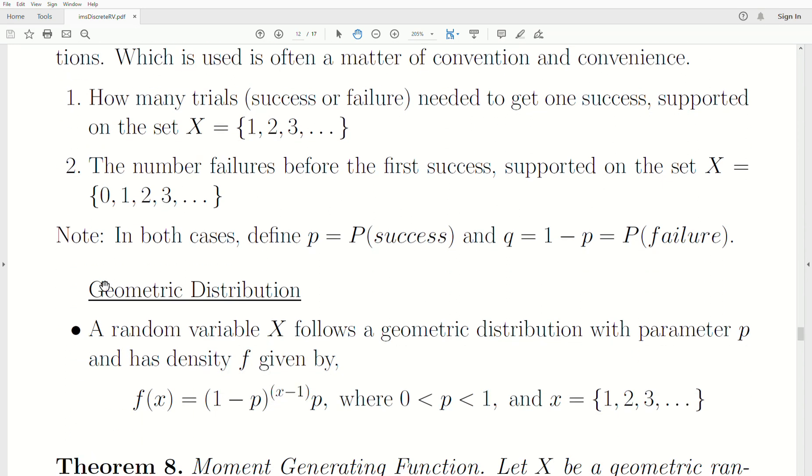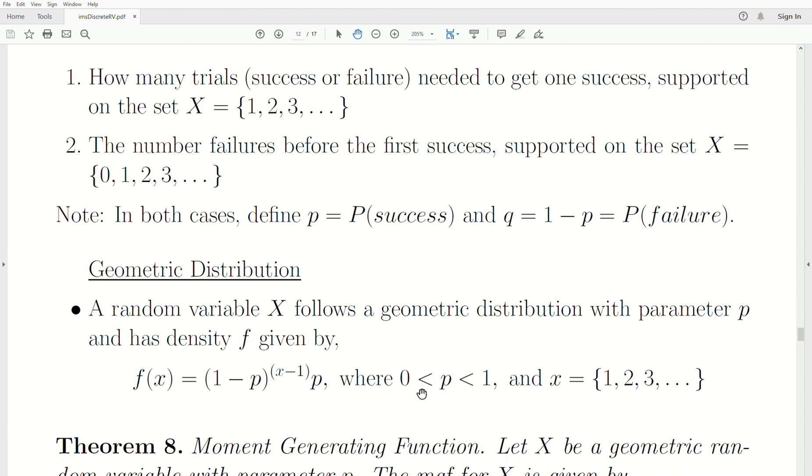So the geometric distribution: a random variable X follows a geometric distribution with parameter P. Note that in both cases, we define P as the probability of success, and one minus P, sometimes called Q, is the probability of failure. That's what this parameter P is in our distribution. The support is on the positive integers.